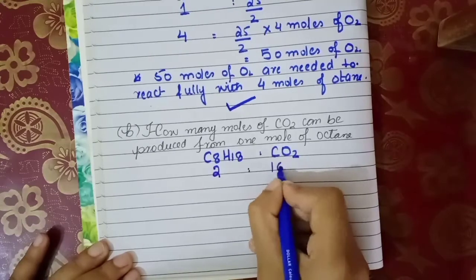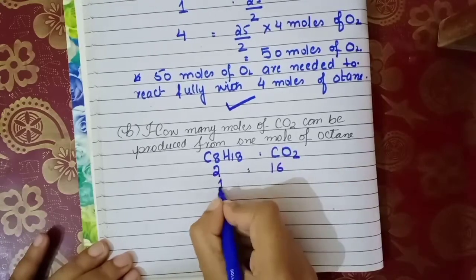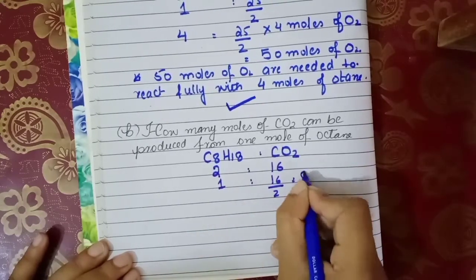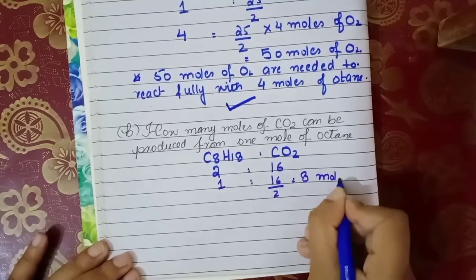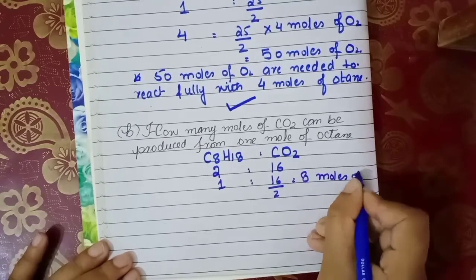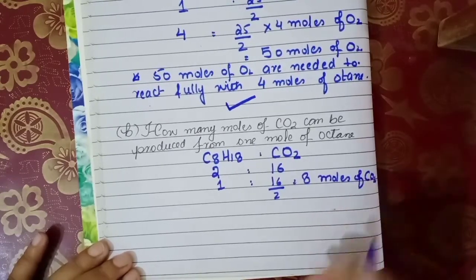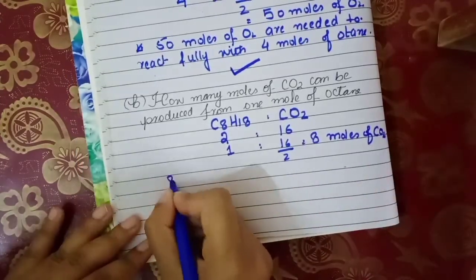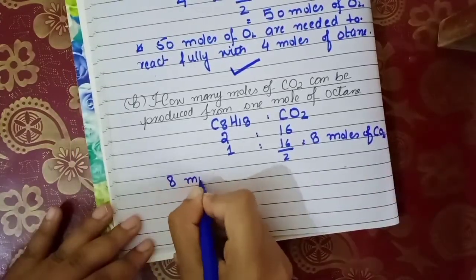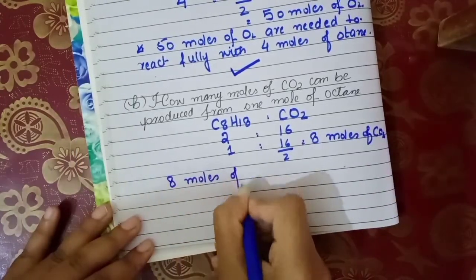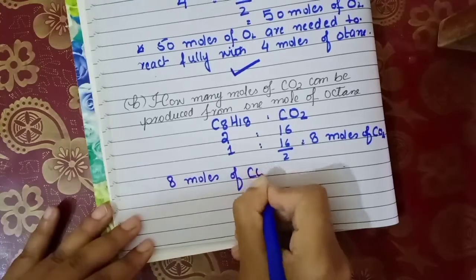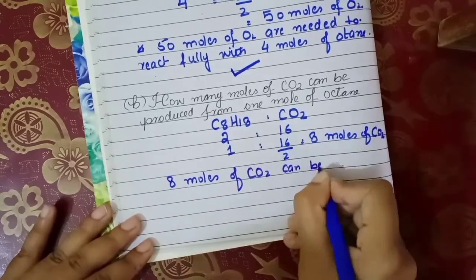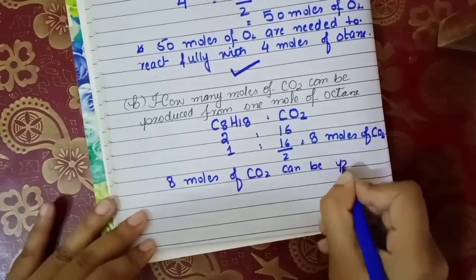After the comparison, one mole of octane gives 16/2, that is 8 moles of CO₂. So the answer is that 8 moles of CO₂ can be produced from one mole of octane.